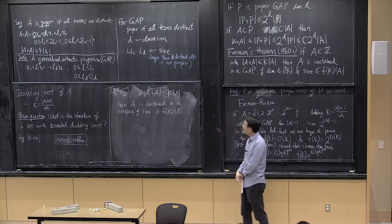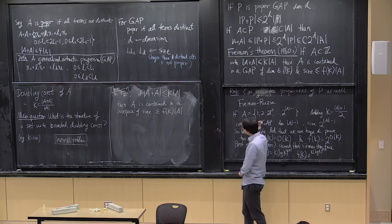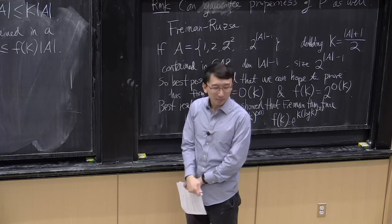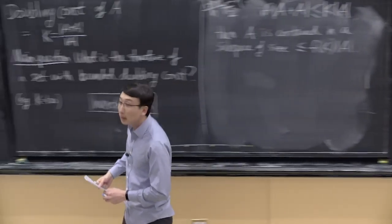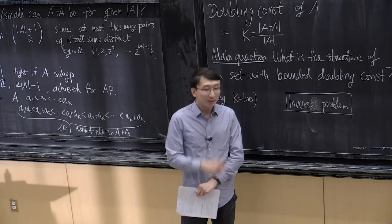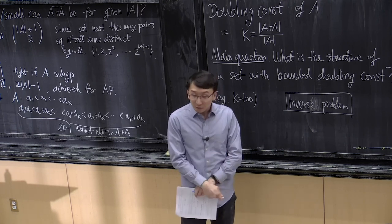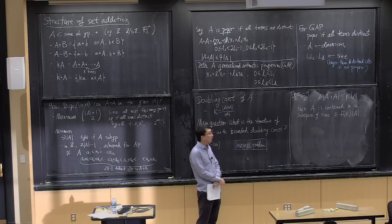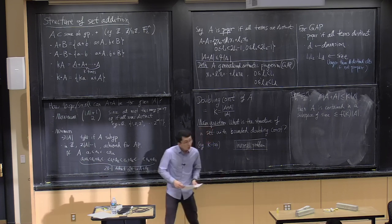The finite field version is easier because you don't even need to think about which subspace to take — you can just take the subspace generated by the elements of A. The f(K) bound here is still exponential in K; the construction is to take A to be a basis.